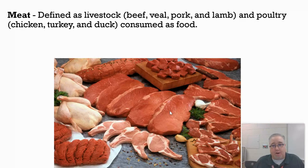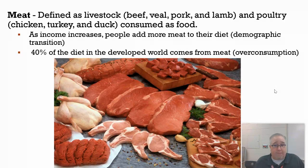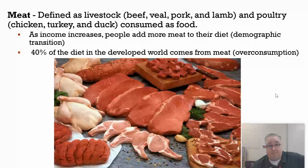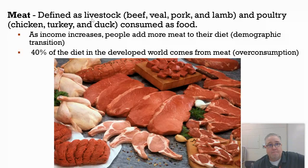We talked a little bit earlier about the human diet. A lot of our diet comes from grains, but depending on where you live — in the developed world or the developing world — you get a certain percentage of your diet from meat products. Meat is basically defined as livestock, animals that we raise in order to eat, like chickens for eggs or cattle for hamburgers and steaks.